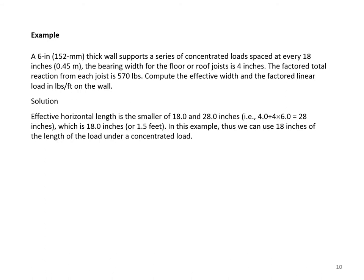The effective horizontal length is the smaller of 18 and 28 inches. The 28 inches is obtained from 4 inches—the bearing width—plus four times the wall thickness. Therefore, the effective horizontal length is 18 inches, and we can use 18 inches of length under the concentrated load.